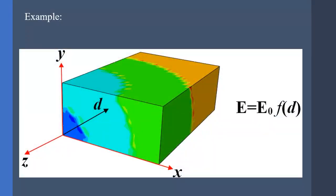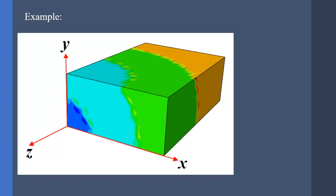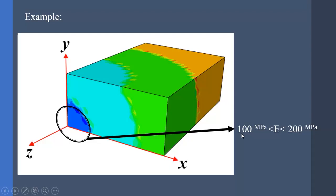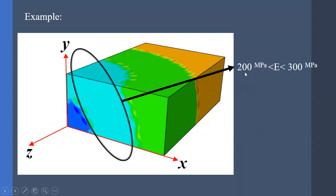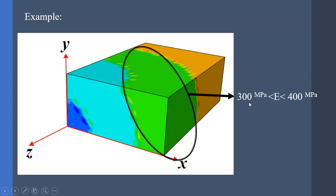Assume we have a body whose elastic modulus changes with the material point's distance from the origin — simply put, our elastic modulus is dependent on distance d. We can easily calculate d using mathematical expressions. In this example, the blue area has elastic modulus 100 to 200 MPa, the next region 200 to 300 MPa, the rest 300 to 400 MPa, and above that the shaded area has 400 MPa. We need to find the distances of integration points from the origin and relate this distance to the elastic modulus.